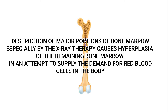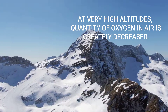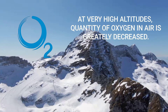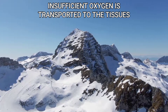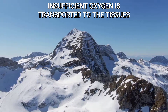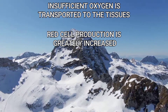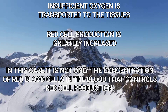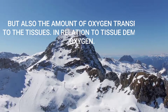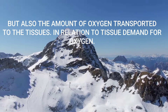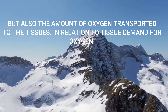Destruction of major portions of the bone marrow, especially by x-ray therapy, causes hyperplasia of the remaining bone marrow in an attempt to supply the demand for red blood cells. At very high altitude where the quantity of oxygen in the air is greatly decreased, insufficient oxygen is transported to the tissues and red cell production is greatly increased. It is not only the concentration of red blood cells but also the amount of oxygen transported to the tissues in relation to tissue demand that controls red cell production.